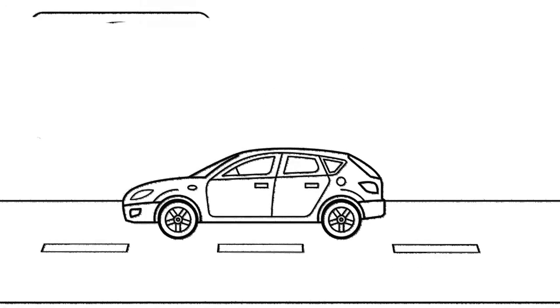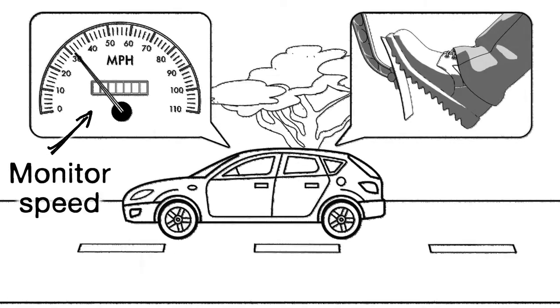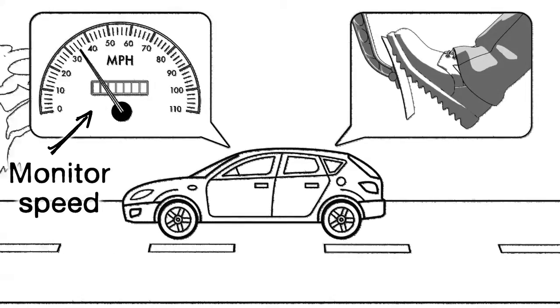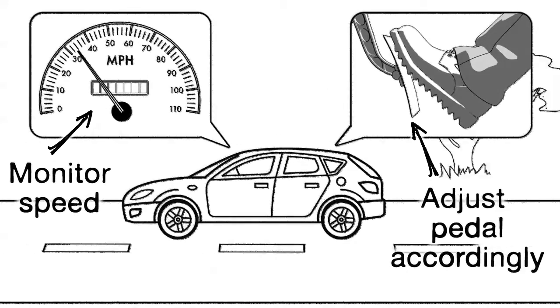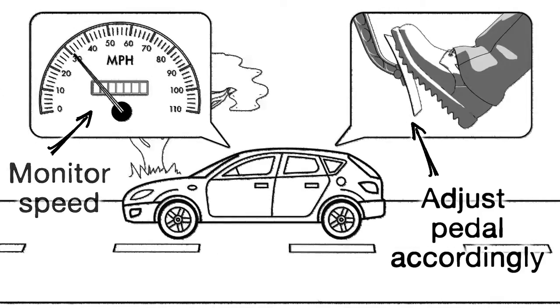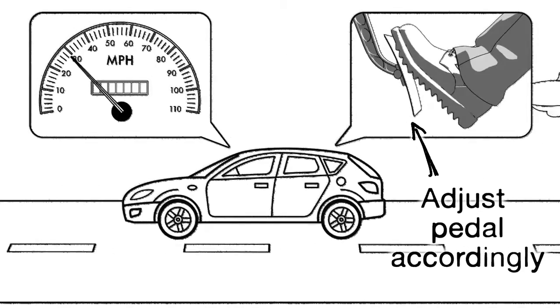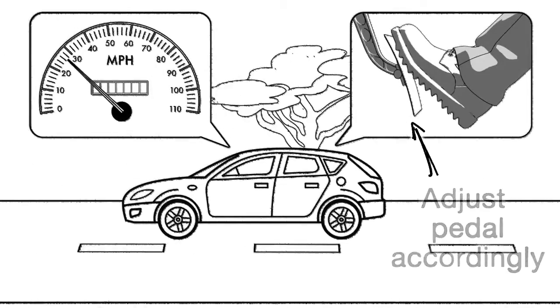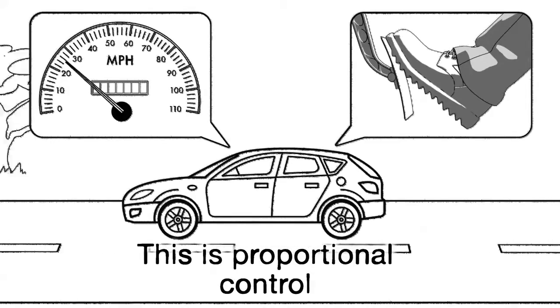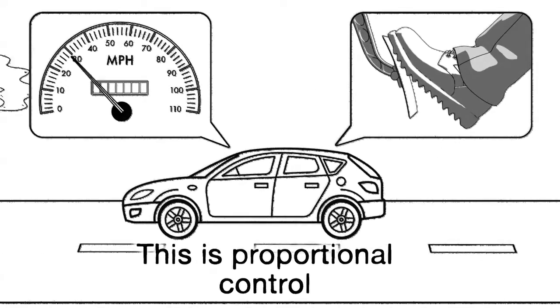How do they work? Imagine driving your car along a flat straight road trying to maintain 30 miles per hour. You alternately depress and release the accelerator pedal according to the speed on the speedometer. Here you form part of a feedback loop and are using proportional control to maintain your desired speed.